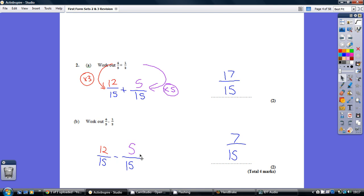So for both of these, we've got 12 over 15 and 5 over 15. Obviously, for adding we add, for taking we take. 12 and 5 is 17. 12 take away 5 is 7. Be very careful. Make sure the denominator stays at being 15. Don't turn it into 30.